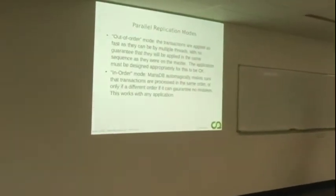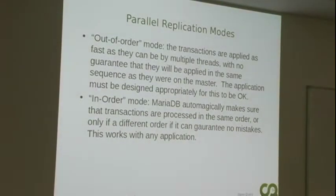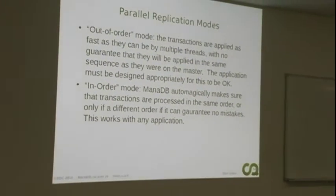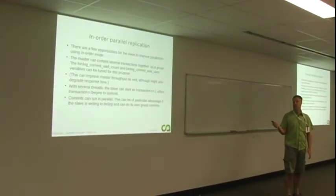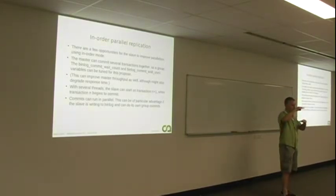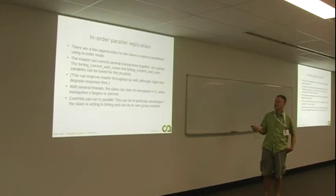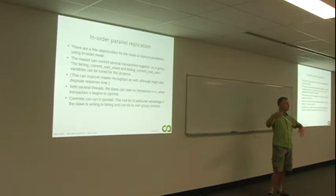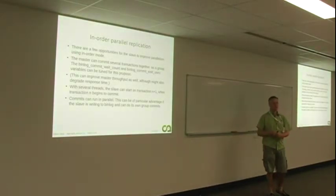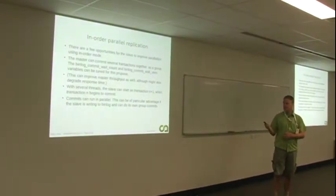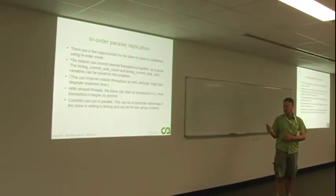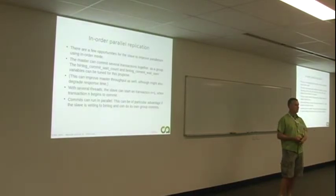There's two modes for the parallel replication. Out of order means it'll just process anything in any order that it finds it. That's way fast. But, if it applies transactions in a different sequence to what was done on the master, you could end up with some different data. So that's only for particular applications that are designed to handle that. In order mode is what you're probably going to use, where MariaDB automagically makes sure all the transactions are processed in a good sequence. And so to get speedups in in order mode, it depends on the master, committing a few transactions at once. There's a couple of variables you can put on the master to control that. The binary log commit wait count and binary log commit wait microseconds. You tune those variables up and it lets the master commit a few together. It makes the master go faster as well and it gives the slave opportunity to, do some parallel committing. Even if you don't do that, there's, there's some, got that button wrong here. There's some particular cases here where the slave can get a little bit of overlap and improve a bit of time as well.